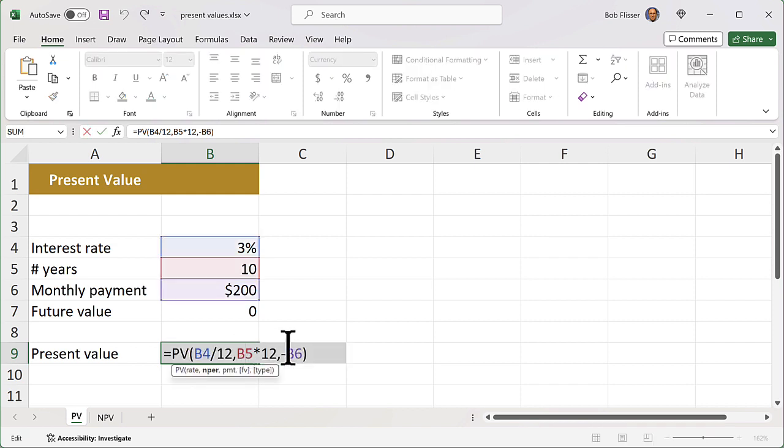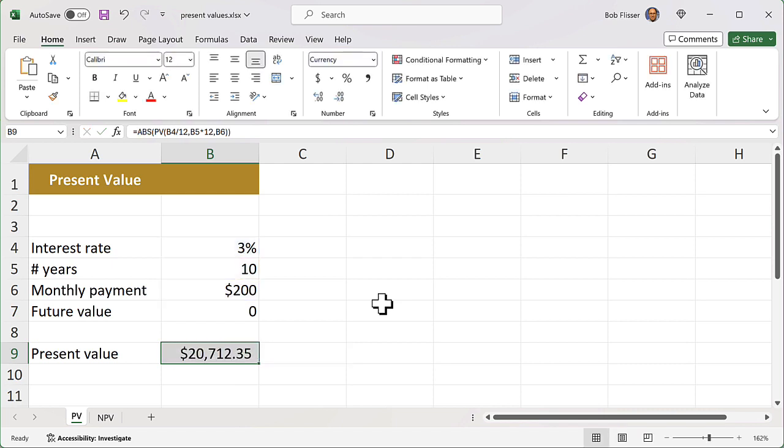Or if you don't like that, because it's technically not correct, what I could do is remove that minus sign and wrap the entire thing in an absolute value function. ABS is absolute value, not anti-lock breaking. And that gives us the same result.